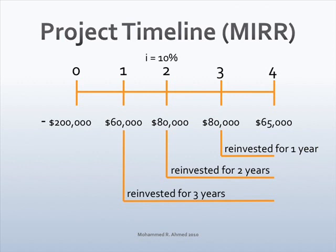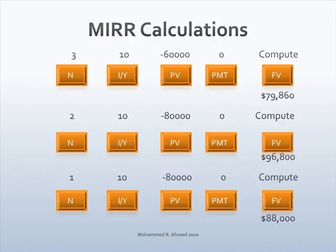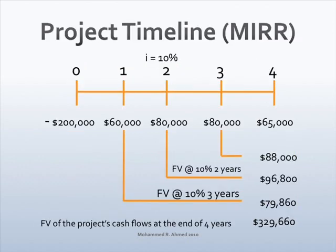Compute the future value of cash inflows at 10%. Year 1 cash flows of $60,000 will be invested for three years — future value is $79,860. Year 2 cash inflows of $80,000 will be invested for two years — future value is $96,800. Year 3 cash inflows of $80,000 will be invested for one year — future value is $88,000. The year 4 cash flows of $65,000 are not reinvested. Post the future values on the timeline and add them — the total is $329,660.